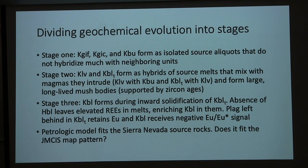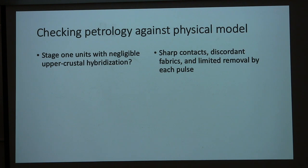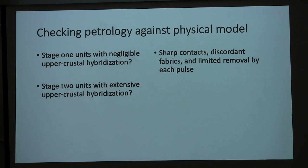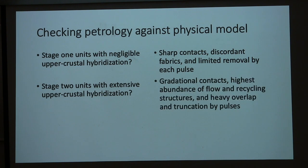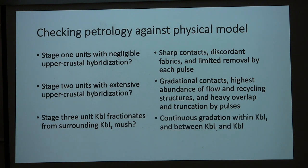Relating this to the physical model: negligible upper crustal hybridization in early stages fits with our discordant fabrics and sharp contacts. The hybridized units fit with our gradational contacts, flow and recycling structures, and the heavy removal of those units. The fractionation of KBL from KBLT fits with the gradation throughout those two facies and their gradational contact. So our physical model and our petrologic model mesh.